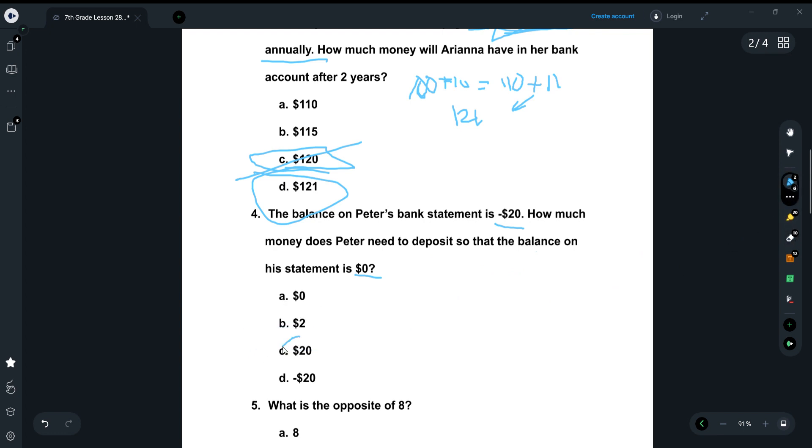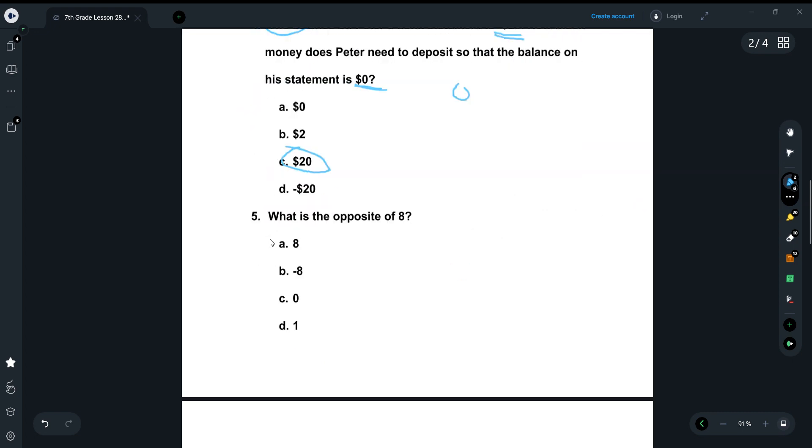So how to explain this would be like if I gave you an apple, right? And in order for me to have the same amount of apples as before, how many apples do you need to give to me? You need to give me one apple so that I can have the same amount of apples as I did before I gave it to you. So if you think about it this way, then let's say Peter's bank statement has, he has given away $20 to somebody right now. How much money does he need to put in the bank so that the bank is at the same point as before, which would be zero? So that would have to be 20.